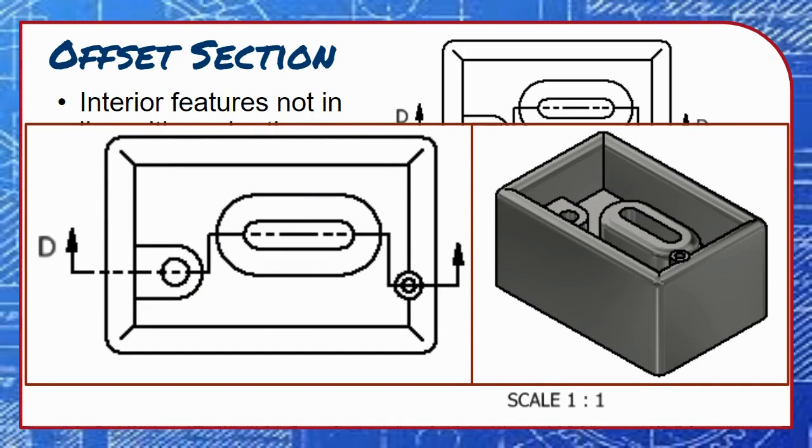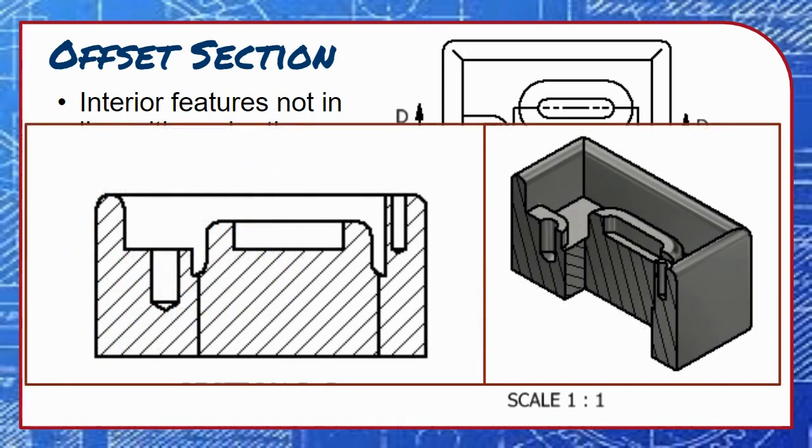The resulting section view isn't made from one straight cut, but from a strategic offset path created by the cutting plane line. This eliminates the need for several cutting plane lines and section views for a single part.